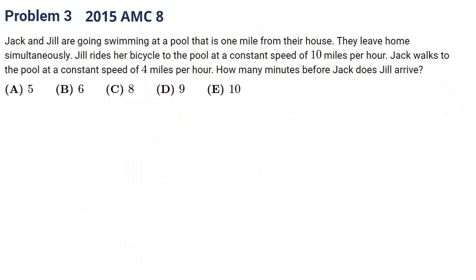Okay, let's see the next one. It's 2015 problem 3. Again, let's pause the video. Okay, welcome back. Jack and Jill are going swimming at a pool. It's one mile, the distance is one mile from their house. They leave home simultaneously. Jill rides the bike at a speed of 10 miles per hour. Jack walks at a speed of 4 miles per hour. How many minutes before Jack does Jill arrive?